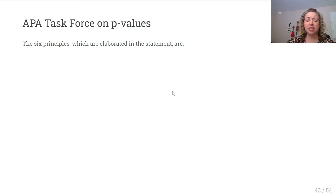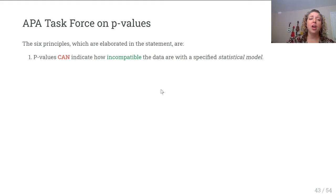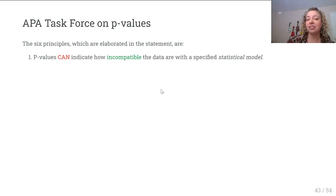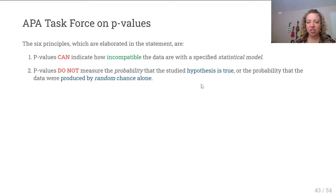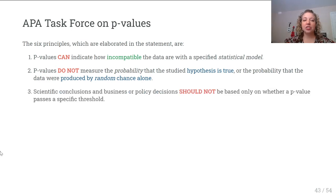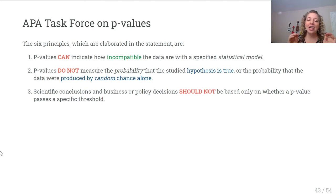There are six principles in the APA Task Force publication. First, a p-value can indicate how incompatible data are with the specific model — it tells you how extreme the data is compared to the null hypothesis. Second, p-values do not measure the probability that the hypothesis is true or that the data were just due to random chance — this is the most misunderstood part about p-values. Third, scientific conclusions and business or policy decisions should never be based only on a p-value, whether or not it's above or below any threshold.